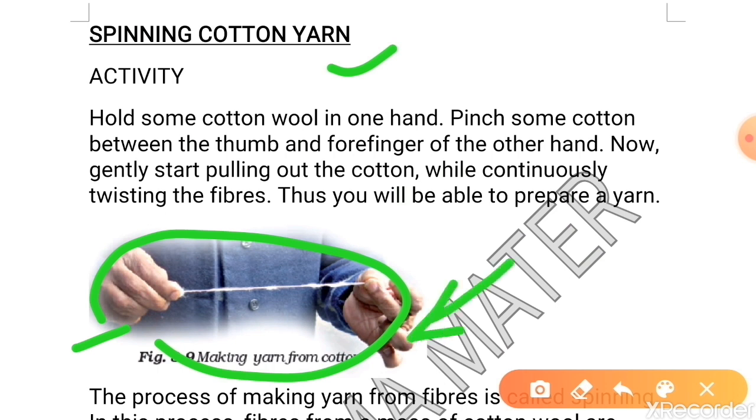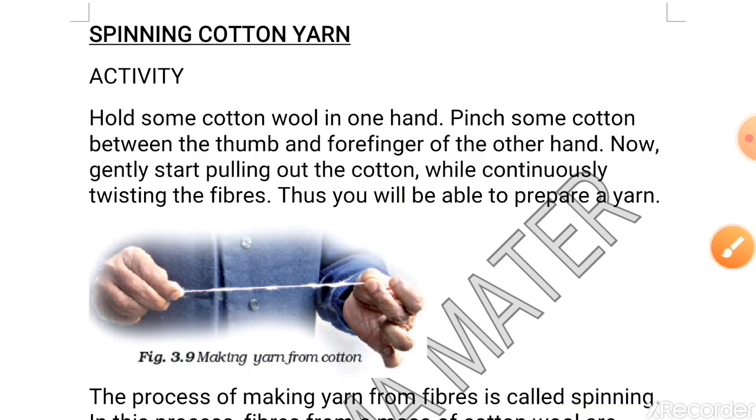But this is not the only way of doing spinning. There are many devices which we can use for this process. A simple device used for spinning is hand spindle which is also called takli. Another device is charkha. Now I will show you both of them.